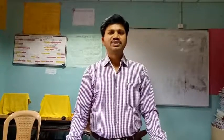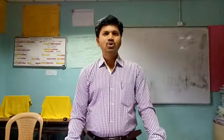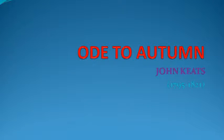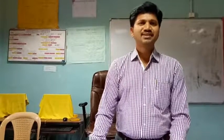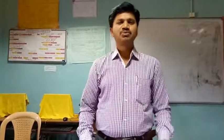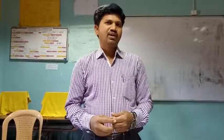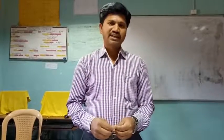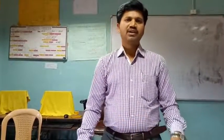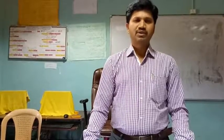Hi viewers, this is Dr. Jask. Today I am going to teach the lesson Ode to Autumn. Ode to Autumn is a poem written by John Keats. John Keats is said to be the youngest poet of all the romantic poets in English literature. He was born in the year 1795 and died in the year 1821.